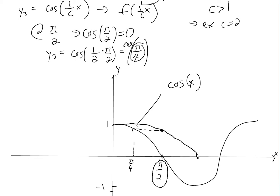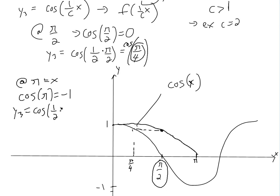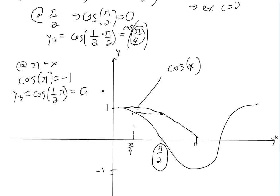Let's say this is pi. At x equals pi, we have cosine pi equals negative 1. But for y3, we'll have cosine of 1 over 2 times pi, which is pi over 2. This is just equal to 0. So it's going to be 0 at that point, and the graph stretches outward. So this is cosine of x over 2.